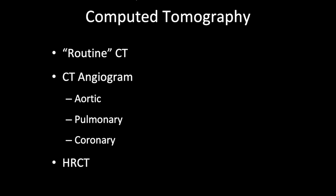Finally, we're going to speak about computed tomography — CT. CT basically gives you multi-planar imaging and better tissue contrast in general. There is a routine CT of the chest with intravenous contrast media. There is a CT angiogram — including aortic angiogram, pulmonary angiogram for pulmonary embolism, or coronary angiogram for ischemic heart disease. And if you want to look at the lung alone, particularly for interstitial lung disease, there is a high-resolution CT.